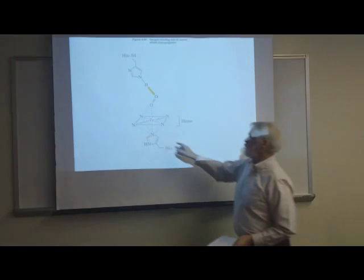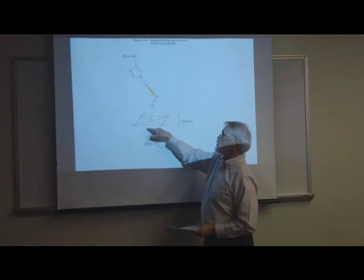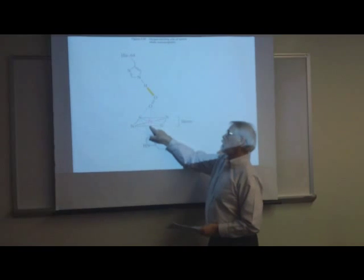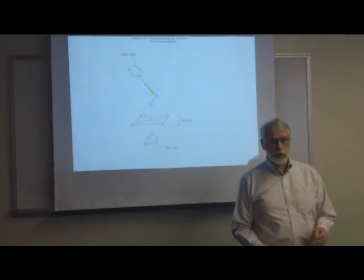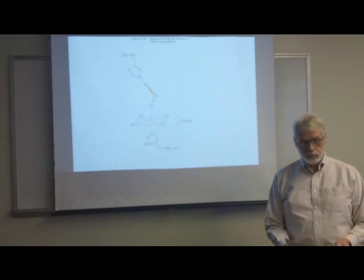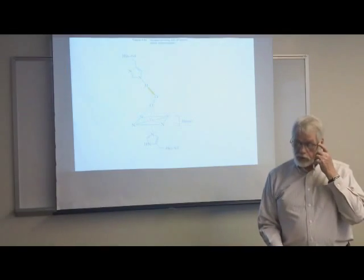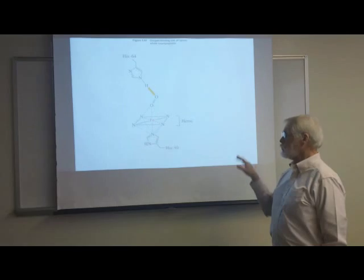There's six positions of iron: four around the center, one below and one above, an octahedral kind of complex. The iron itself has six ligand positions on it.